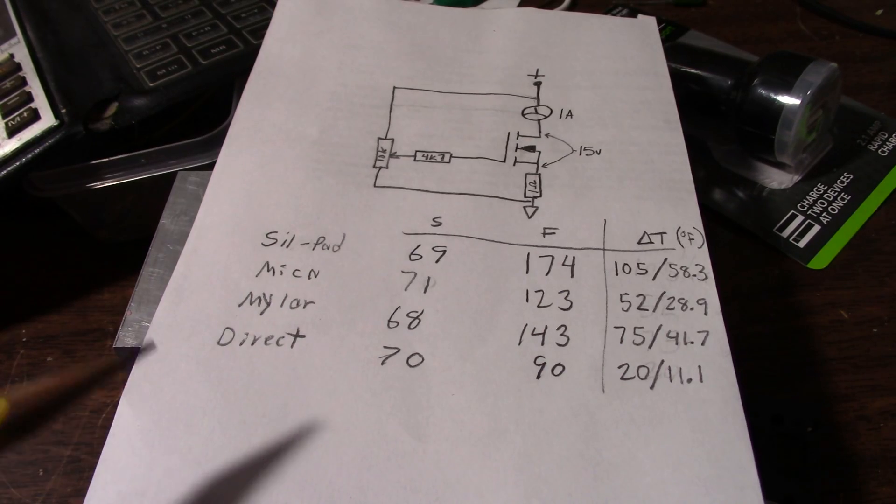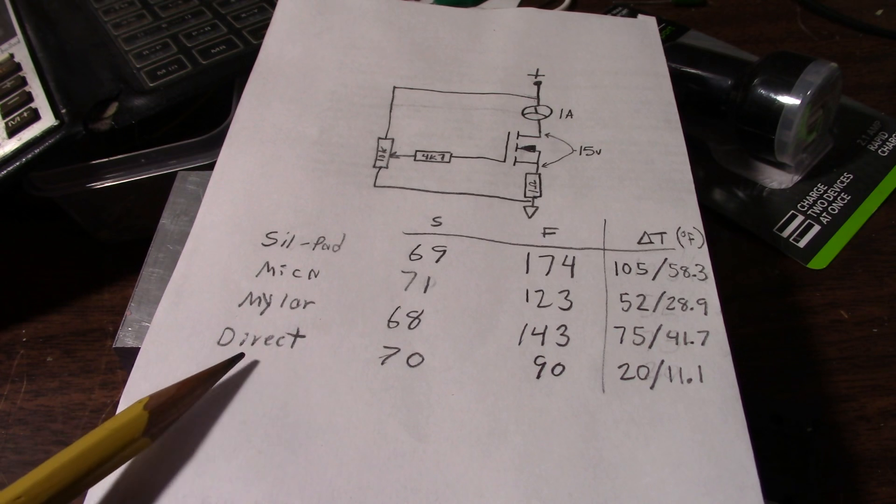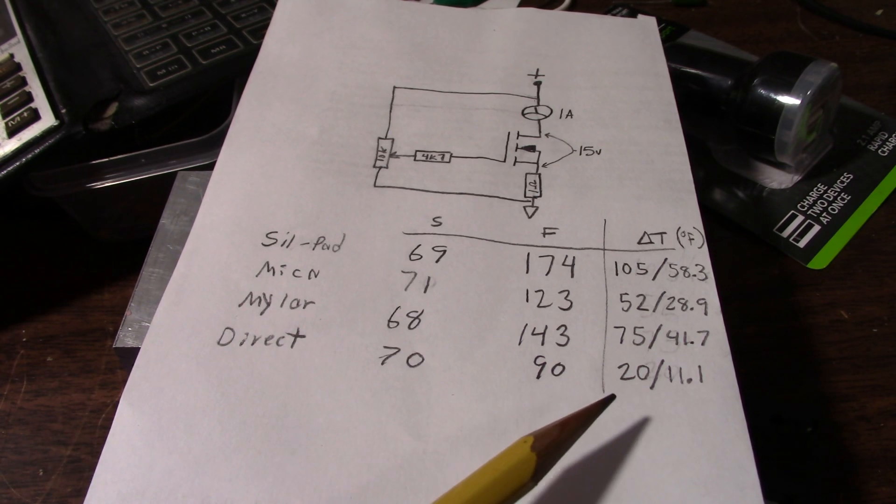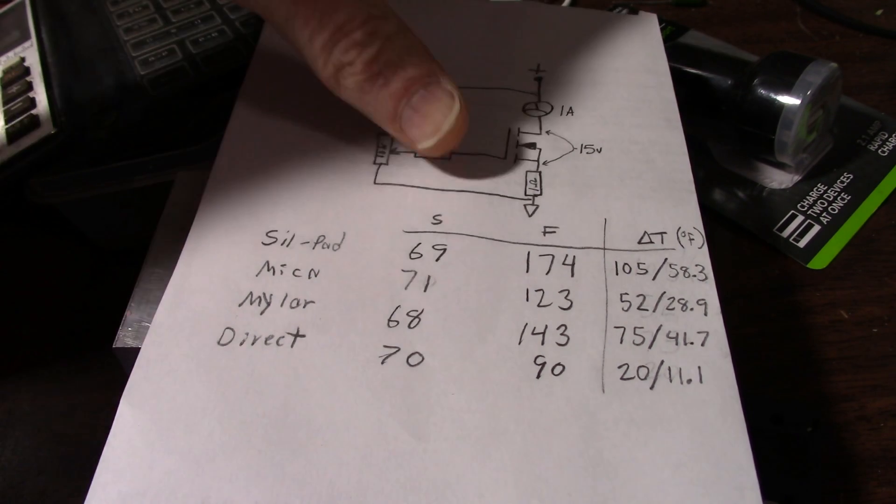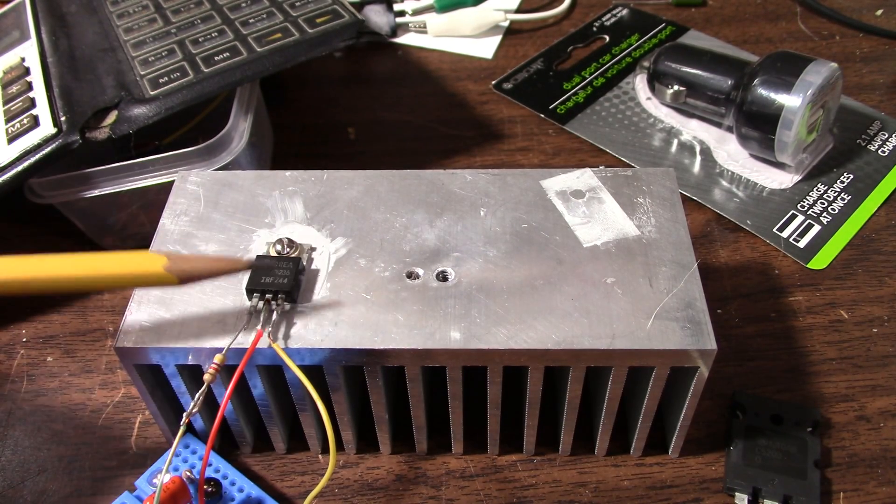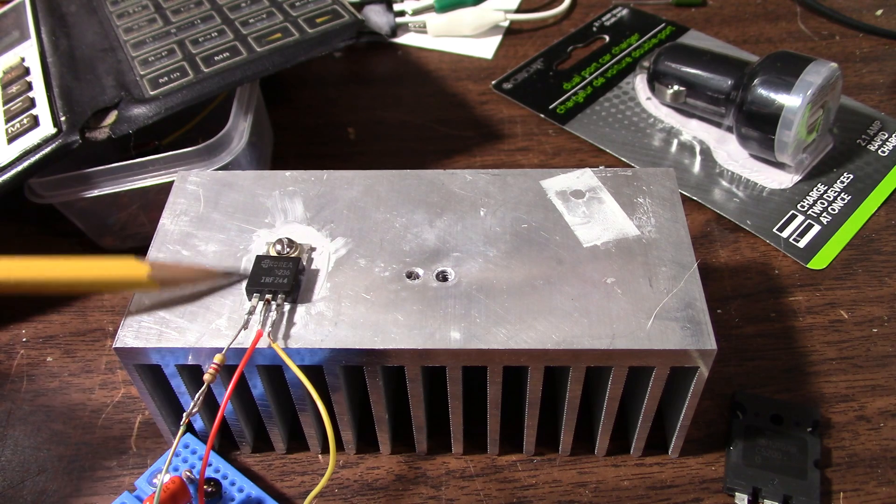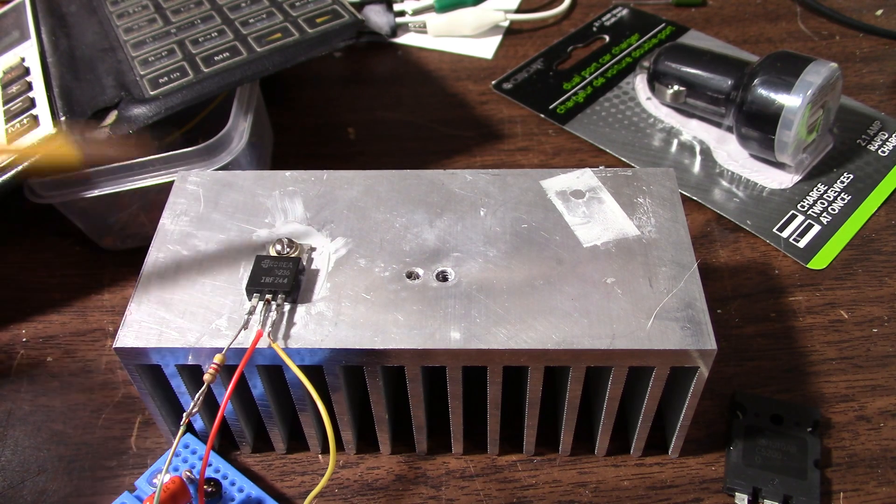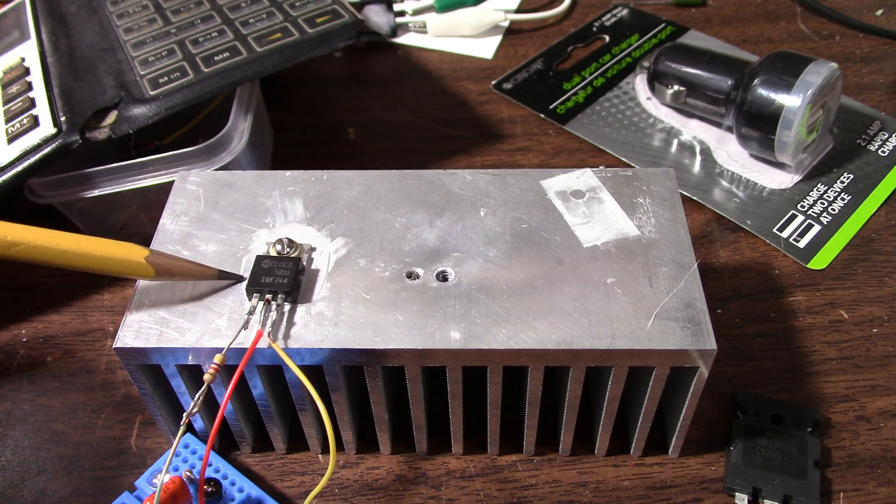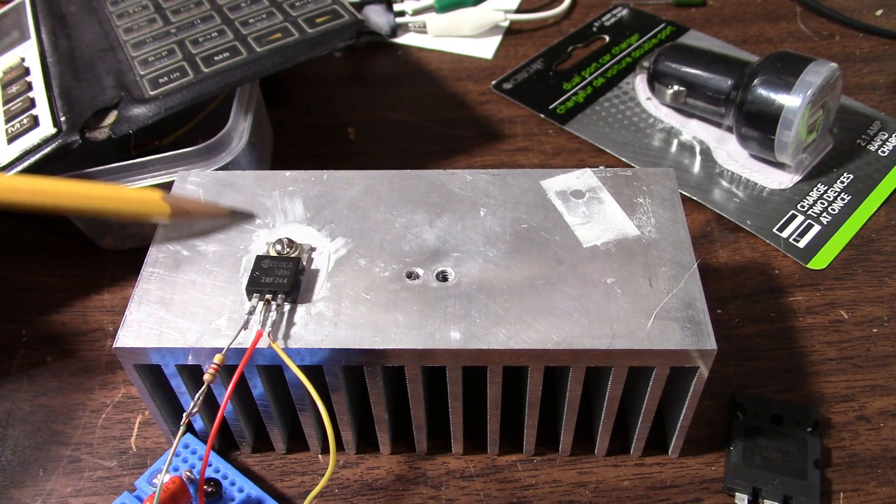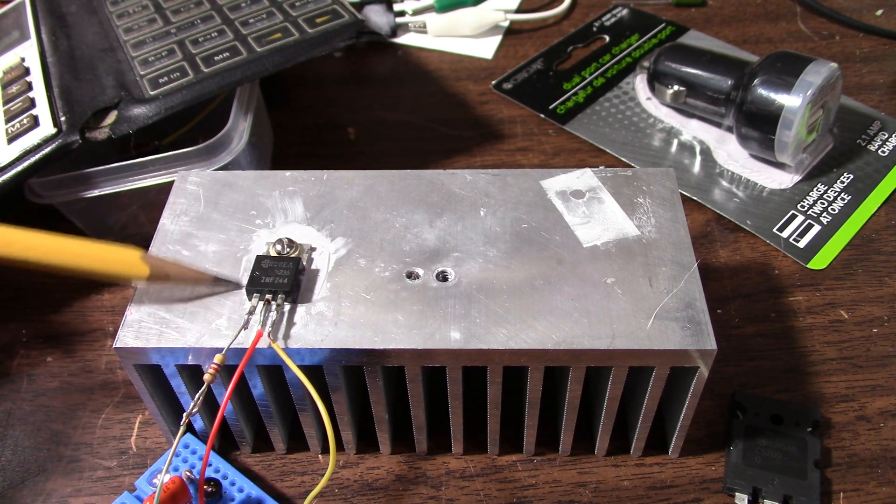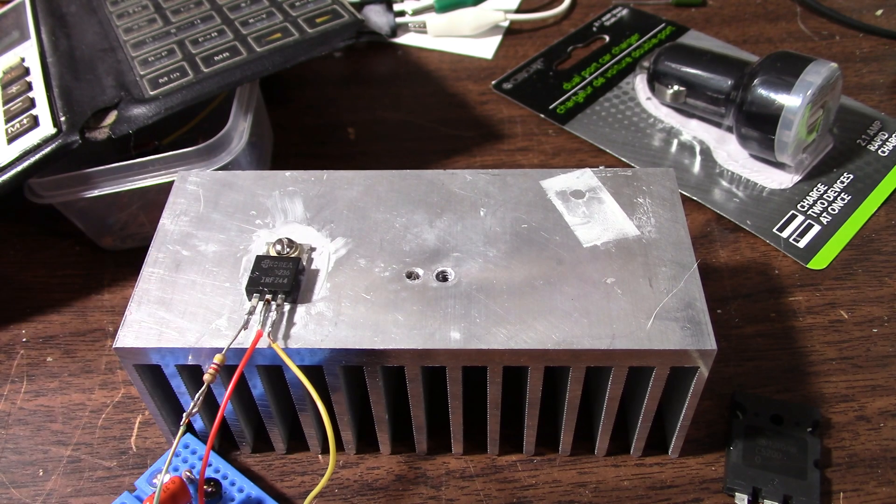And carrying on here, not surprising, direct on the heat sink did extremely well. Only 20 degrees delta T, which is 11.1 in Celsius. So yeah, mounting the transistor direct to the heat sink without any isolation certainly gives you a much better thermal conducting performance of getting the heat out of that transistor. But like I say, you can't always directly mount without electrical isolation problems.